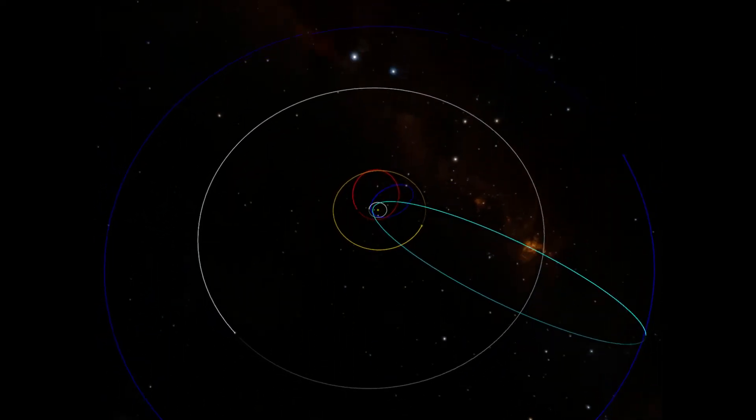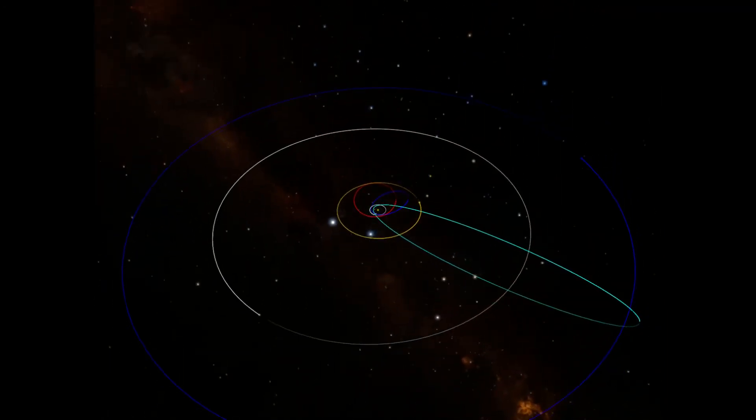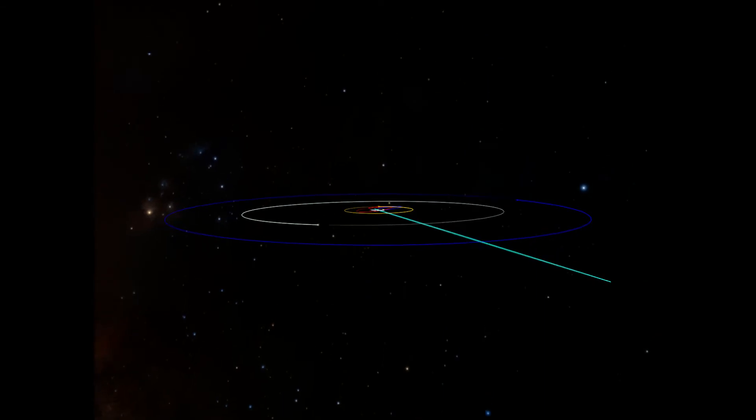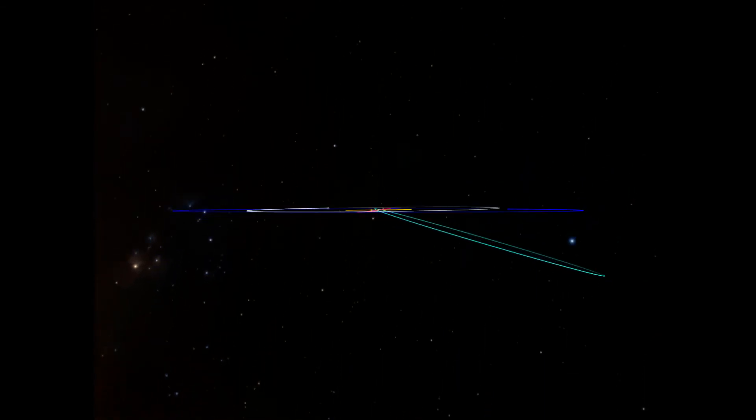You can also see how the periodic comets' orbits are relatively in line with the plane of the solar system. Halley's comet, on the other hand, is at a noticeable slant or incline from this plane.